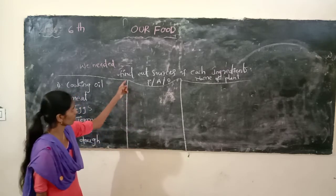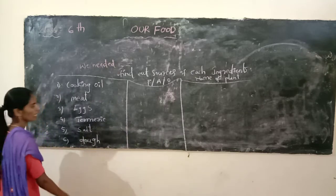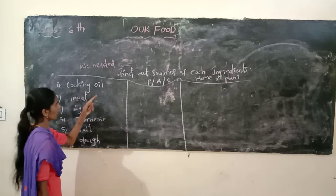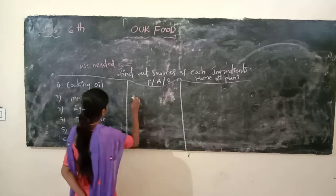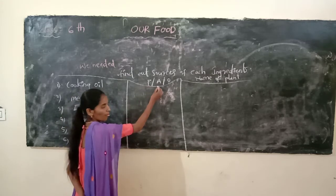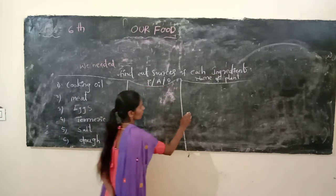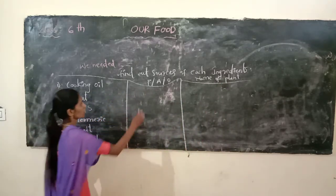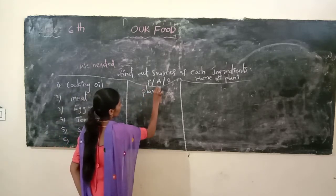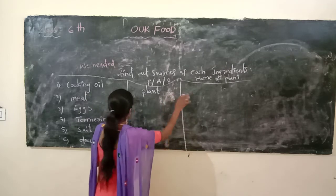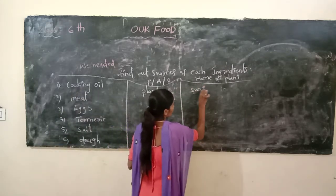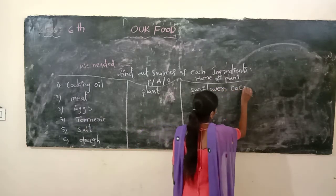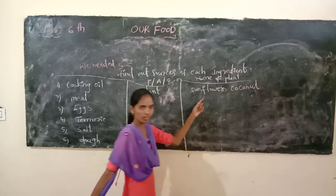Let us now look at the sources of each ingredient. First one: cooking oil — where is it coming from? It is coming from a plant. For example, sunflower oil and coconut oil — these are plant sources. Next, meat — where is it coming from? Meat comes from animals, such as goat and hen.